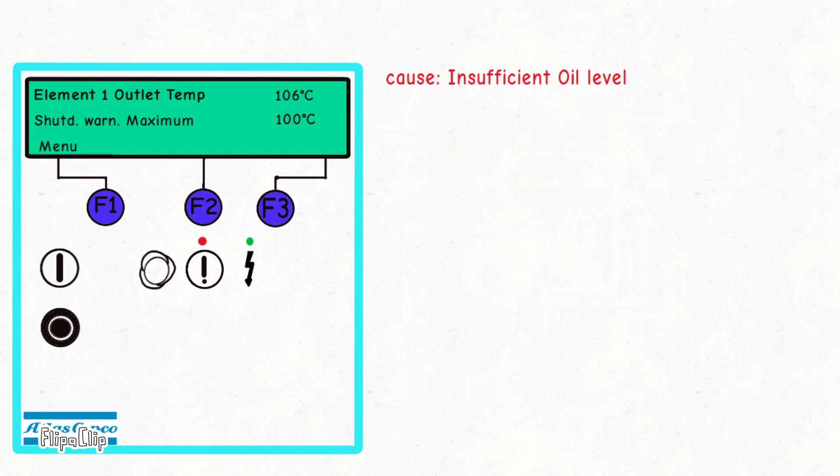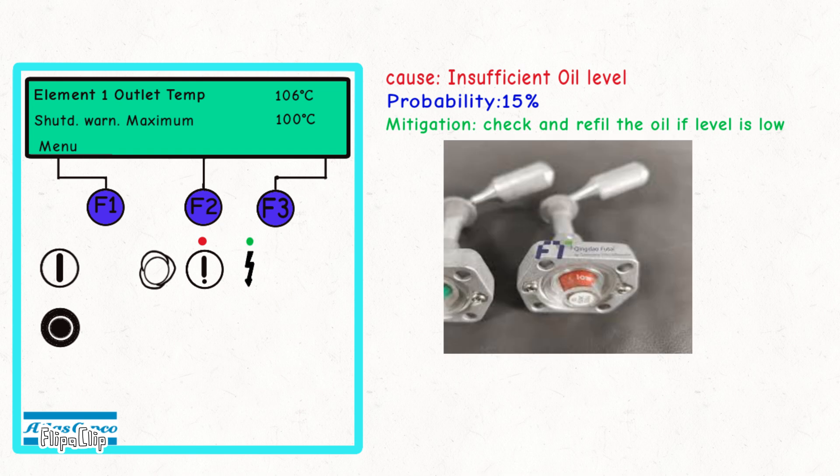Insufficient oil levels can lead to high temperatures, with a probability of 15%. If there isn't enough oil, cooling and lubrication will be inadequate. The solution is simple: check and refill the oil if the level is low. Daily inspections should be performed to monitor oil levels and check for any leaks. This preventive step can help you avoid unexpected shutdowns.